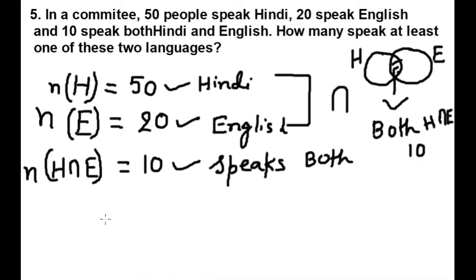Now the question asks: how many speak at least one language? That means either Hindi, or English, or both. This means we need the union. The question wants any language — Hindi or English — so this is H union E, and we need the number of elements of H union E.